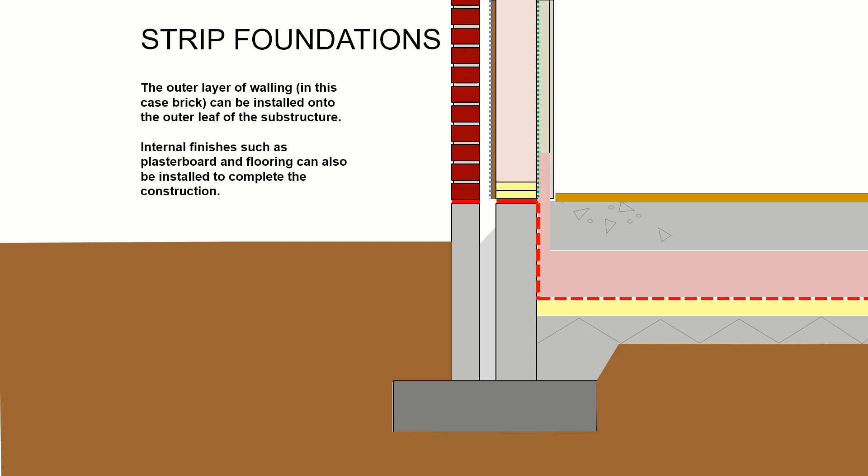To the outside of the frame, we add the outer walling — in this case brick, but it could be block work or stone work. To the inside, we install finishes such as plasterboard and flooring.